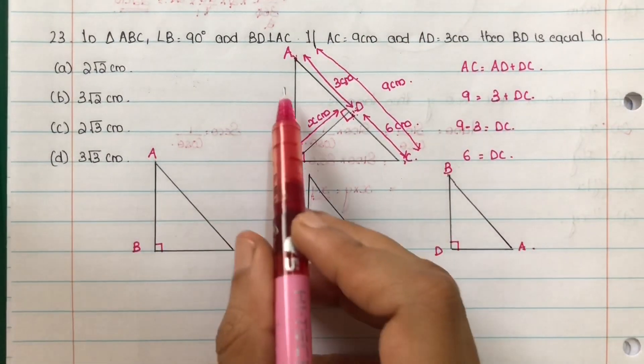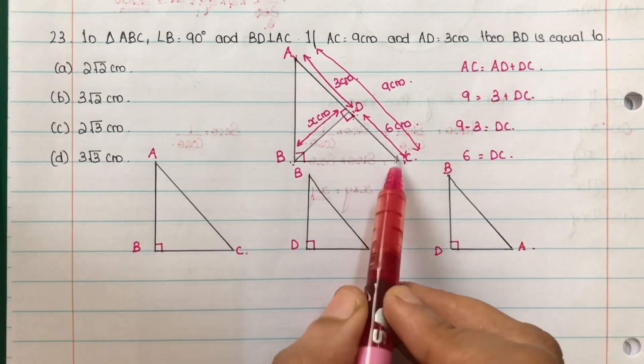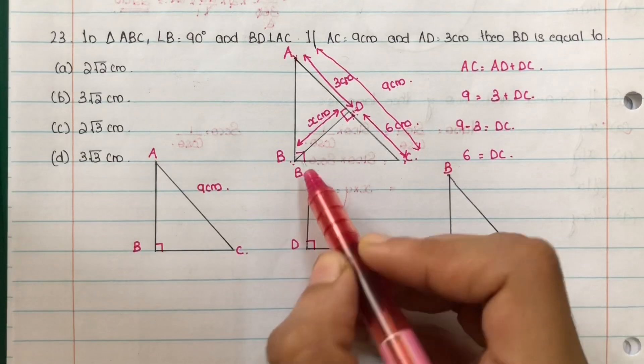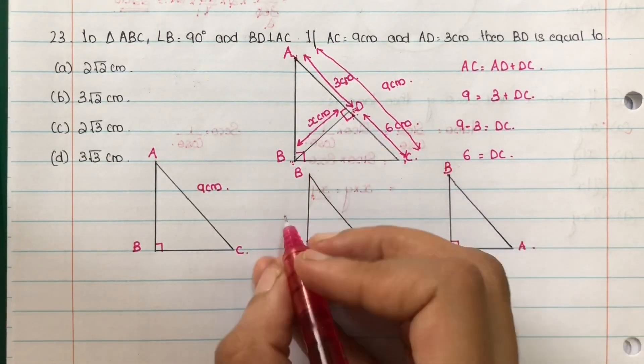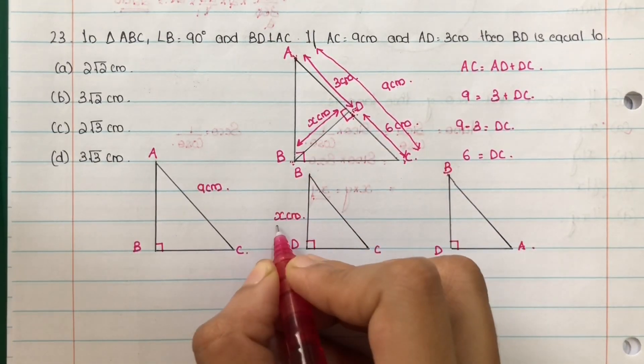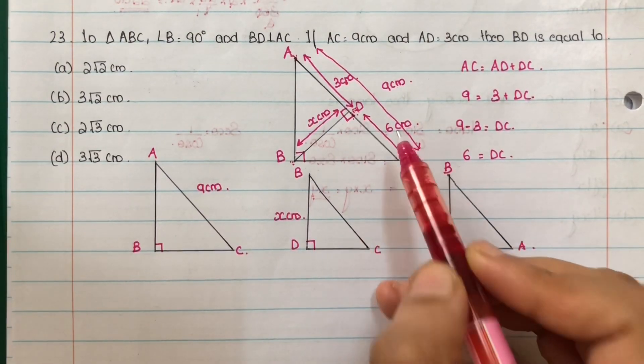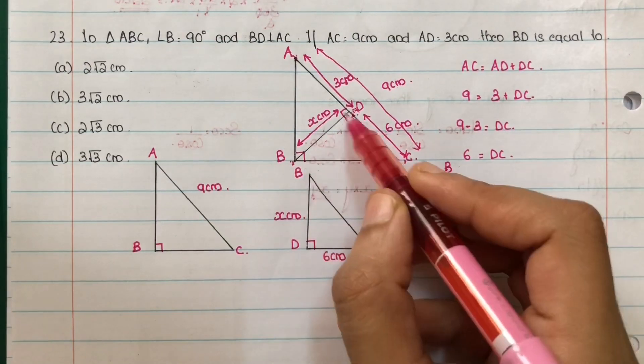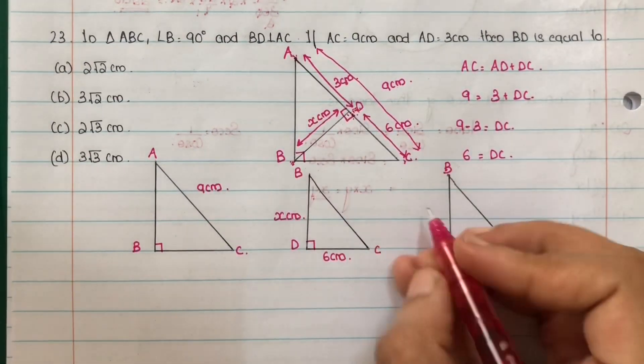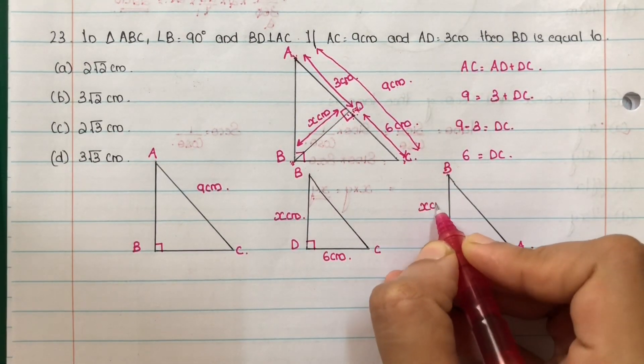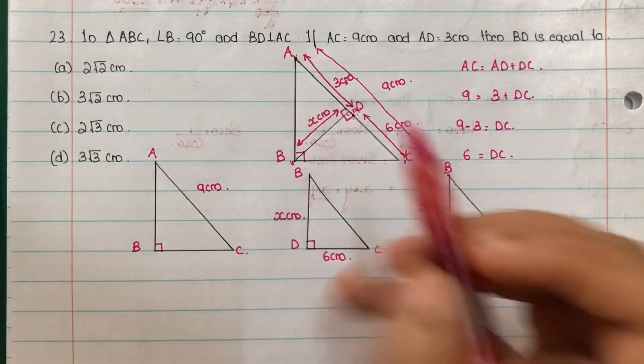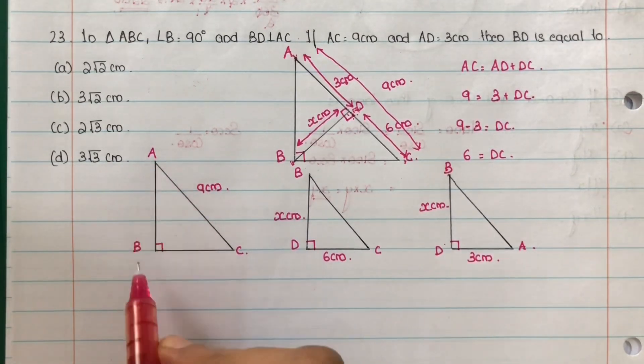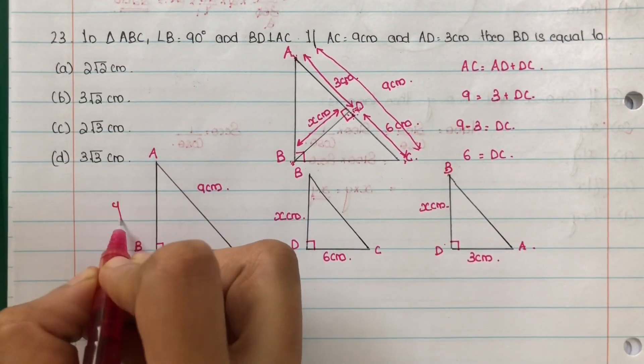Next, length mark. In triangle ABC, AC equal to 9 cm. Next, in BDC, BD is x cm, we can assume. The value we have to find out. Next, DC equal to 6 cm. Next, in triangle BDA, BD again BD x cm. AD 3 cm, AD.